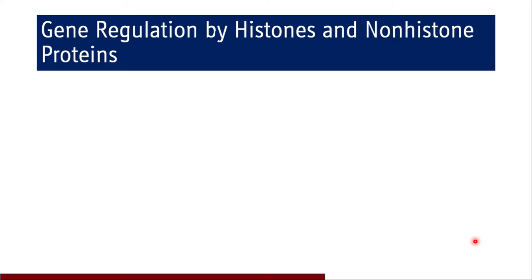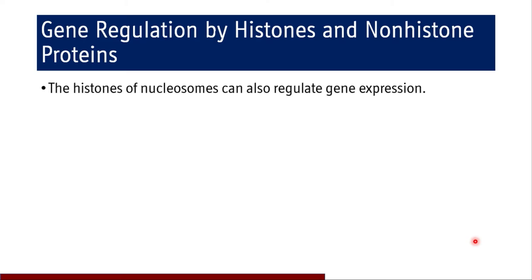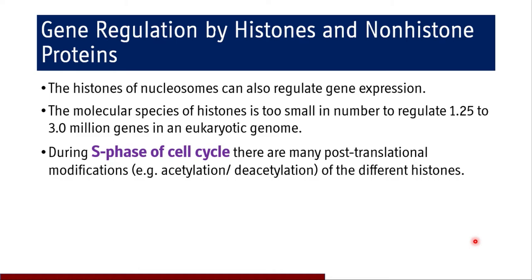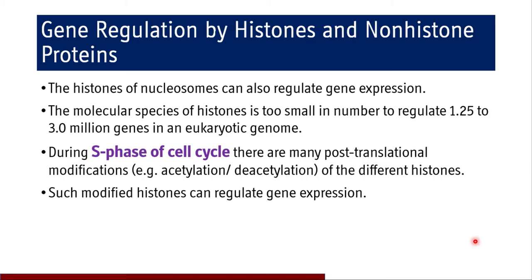Coming to gene regulation by histones and non-histone proteins: the histones of the nucleosome can regulate gene expression. The molecular species of histones are too few in number to regulate the 1.5 to around 3 million genes in a eukaryotic genome, and this regulation occurs during the S phase of the cell cycle. Post-translational modifications of histones — particularly acetylation and deacetylation — help switch transcription on and off. Histone deacetylase enzyme collapses DNA around histones and reduces gene transcription, making the gene less available, while acetylation makes the gene more available for transcription.